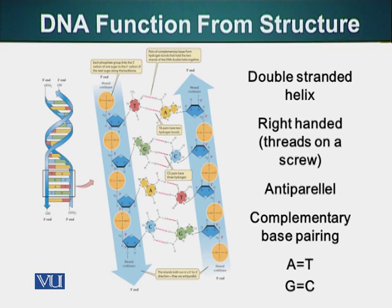We can also see here that G and C, and A and T pairs take up the same amount of space between the two DNA strands, keeping the DNA width constant. Here we can see the antiparallel nature of DNA more clearly.